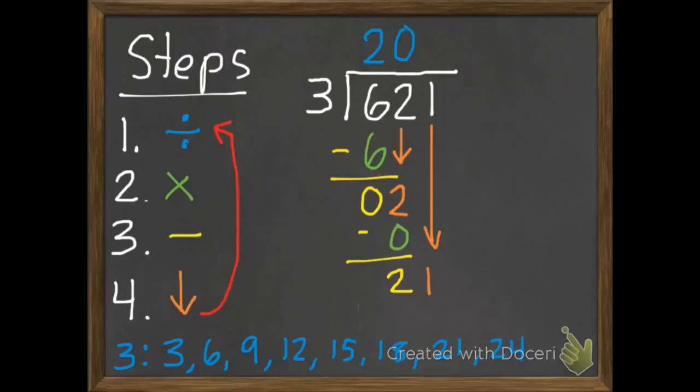We're going to have 21 now. At the bottom there, I can use those multiples I wrote down to help me figure out how many 3's are in 21. So we've got 3, 6, 9, 12, 15, 18, 21. That was 7 3's. So there's 7 3's in 21. So I'm going to write that at the top. Second step, multiply. 7 times 3 is 21.